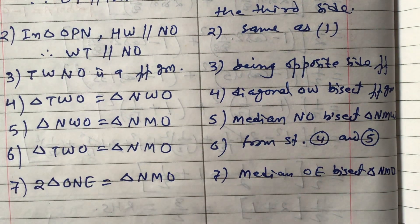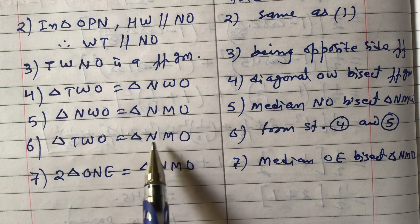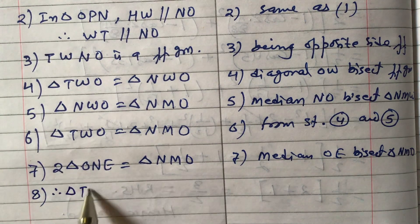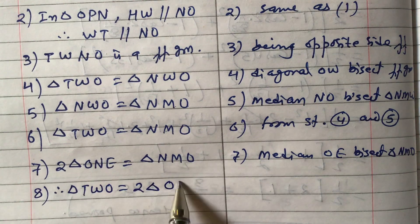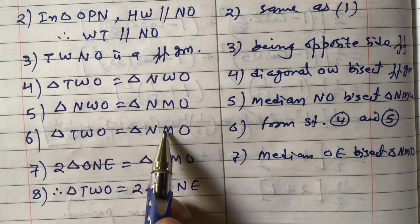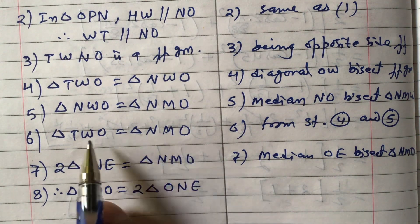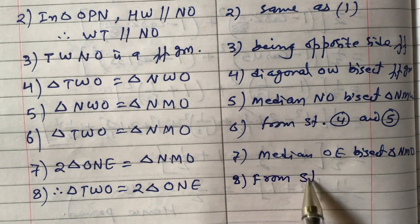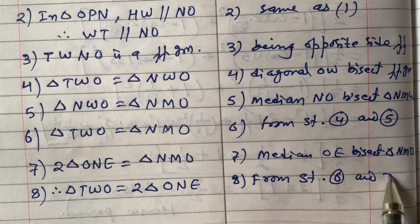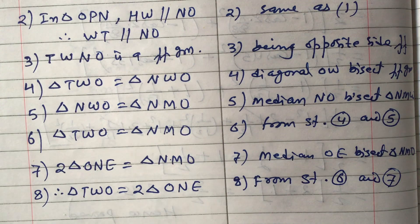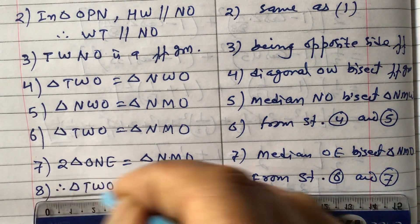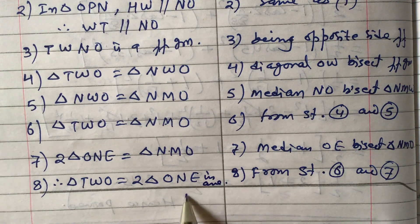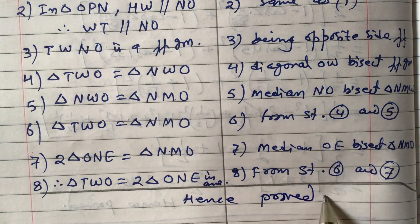Statement 8: From statements 6 and 7, substituting the value — in place of NMO we put two times triangle ONE — we get: triangle TWO equals two times triangle ONE. Hence proved. Writing the final answer: in area, triangle TWO equals two times triangle ONE.